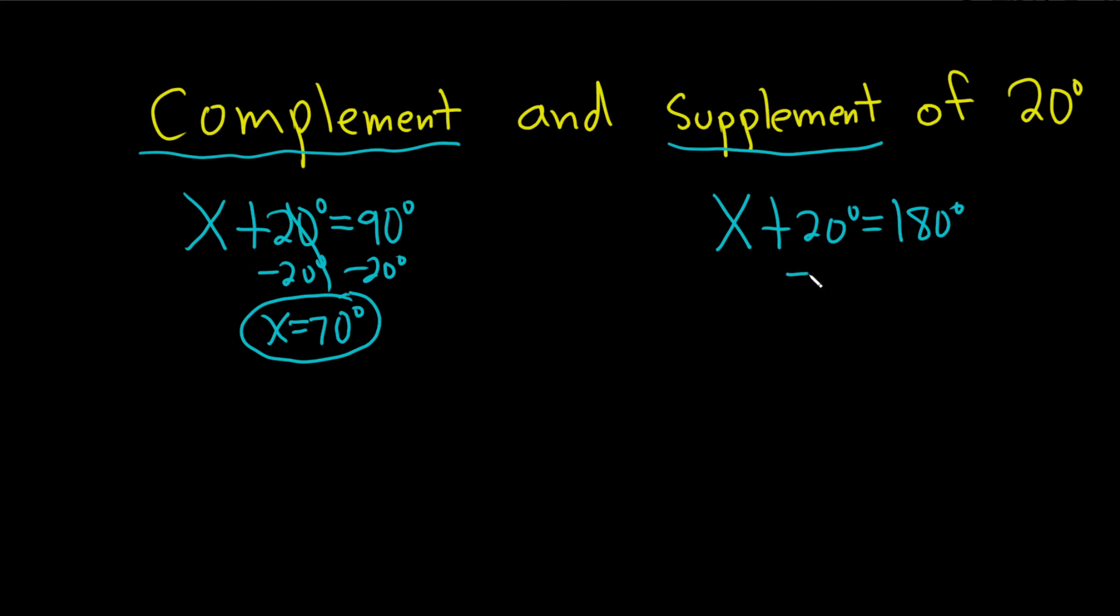So in this case, we just subtract 20 from both sides. So minus 20, minus 20. And so we get x equals 160 degrees.